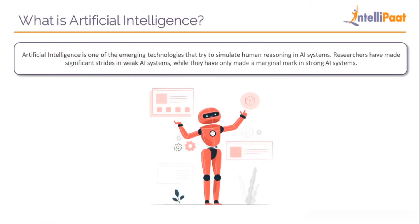Artificial intelligence is one of the emerging technologies that tries to simulate human reasoning. We create programs and code that basically simulate human reasoning in different areas. You can have AI that only does very simple tasks, or AI that can do many different tasks — that's where the classification of AI comes in. Researchers have made significant strides in weak AI systems while only marginal progress in strong AI systems.